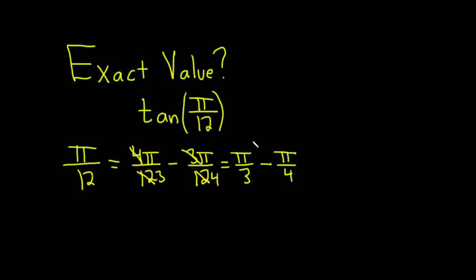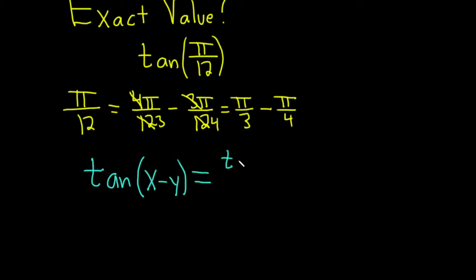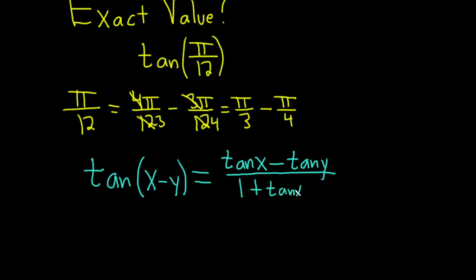We're going to use the difference formula for the tangent function. The tangent of x minus y is equal to tangent of x minus tangent of y, all divided by 1 plus tangent x times tangent y.